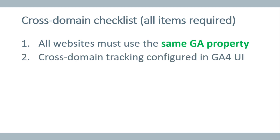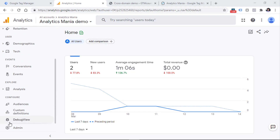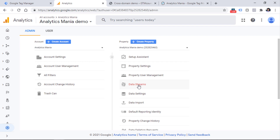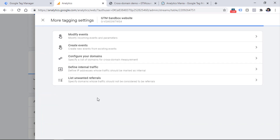The next thing is to configure cross domain tracking in the Google Analytics 4 interface. So let's go to Google Analytics, click Admin, then choose Data Streams, choose your website's data stream, and then click More Tagging Settings. Here you should click Configure Your Domains.